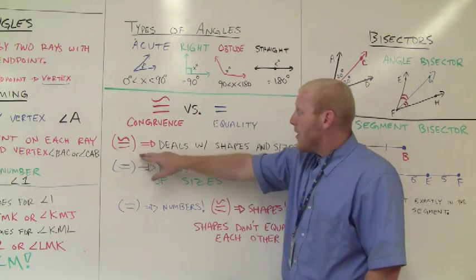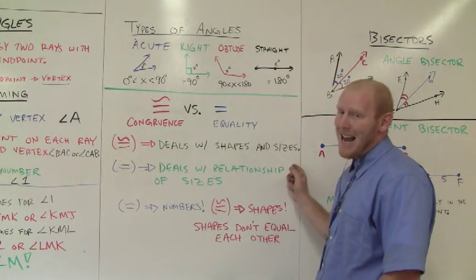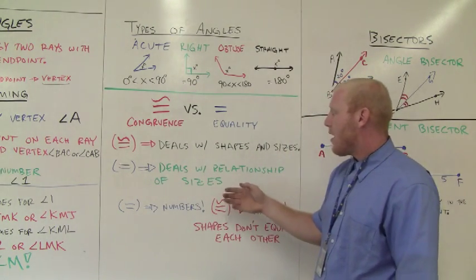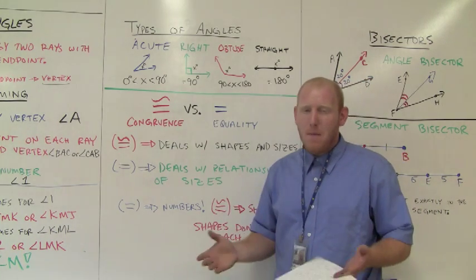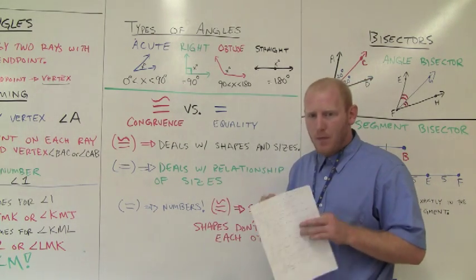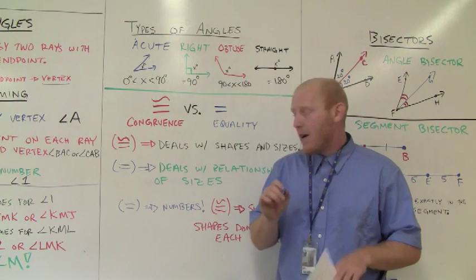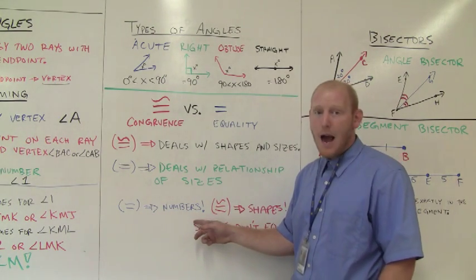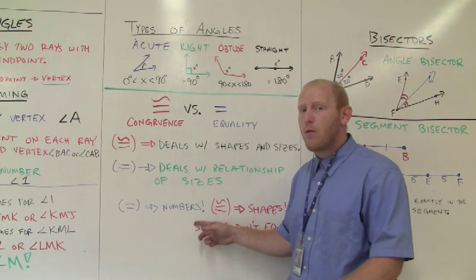Well first, congruence deals with shapes and sizes, whereas equality deals with the relationships of sizes. That may not make sense, so I want to just at the heart of it tell you right now. When you think of equality, think of numbers, how they relate to each other. Does 5 equal 5? Yes.